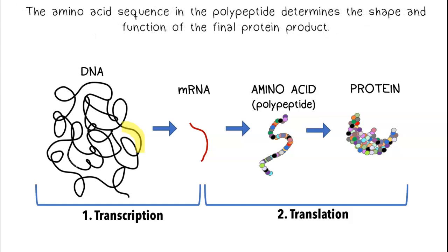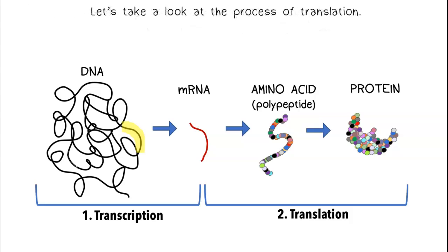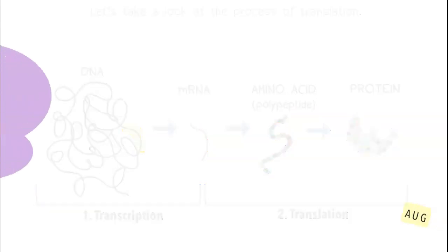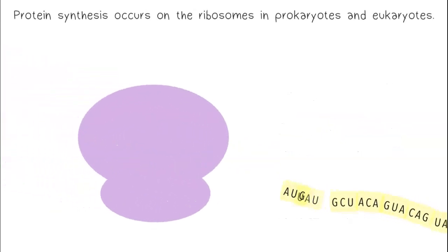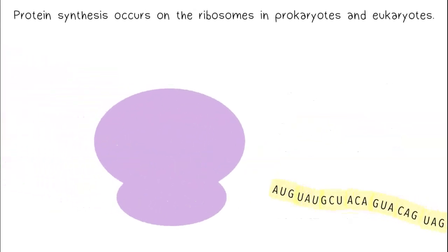The amino acid sequence in the polypeptide determines the shape and function of the final protein product. Let's take a look at the process of translation. Protein synthesis occurs on the ribosomes in prokaryotes and eukaryotes.